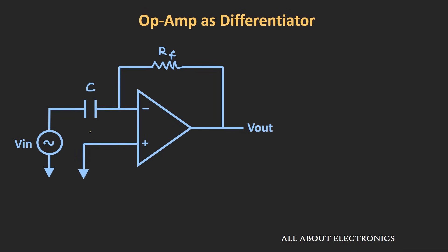Let's say we have applied some input signal, and the current IC is flowing through the capacitor, and current IF is the current flowing through the feedback resistor RF. We are assuming that our op-amp is ideal, so no current is flowing inside the op-amp. Because of the negative feedback, this node will act as a virtual ground, so the potential at this node will be equal to 0V.